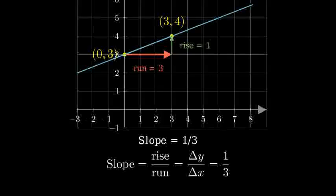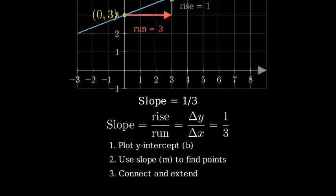Let's review what we've learned. To graph a line in slope-intercept form, first, plot the y-intercept. Then, use the slope to find additional points by moving right by the denominator and up by the numerator. Finally, connect the points and extend the line.